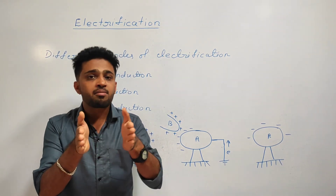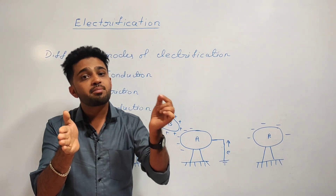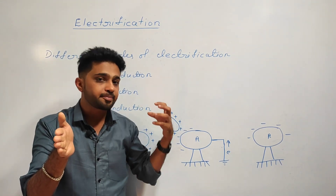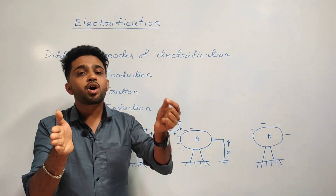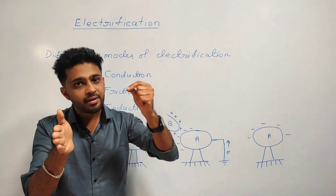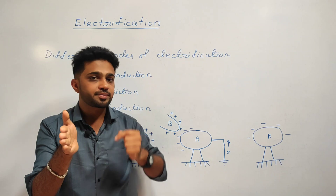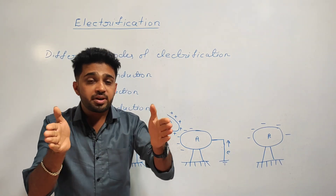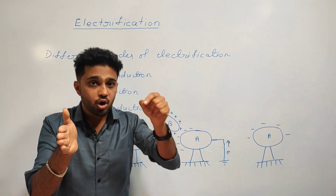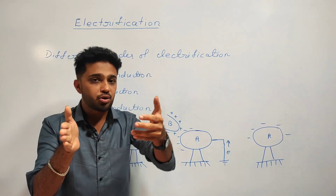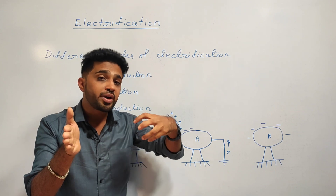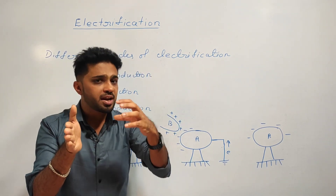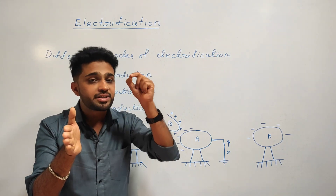Now, in the neutral body the number of protons and the number of electrons is equal. If we remove electrons from the neutral body, the number of protons becomes more than the number of electrons. So the neutral body becomes positively charged because we removed electrons. If we remove electrons the body becomes positively charged; if we add electrons the body becomes negatively charged.